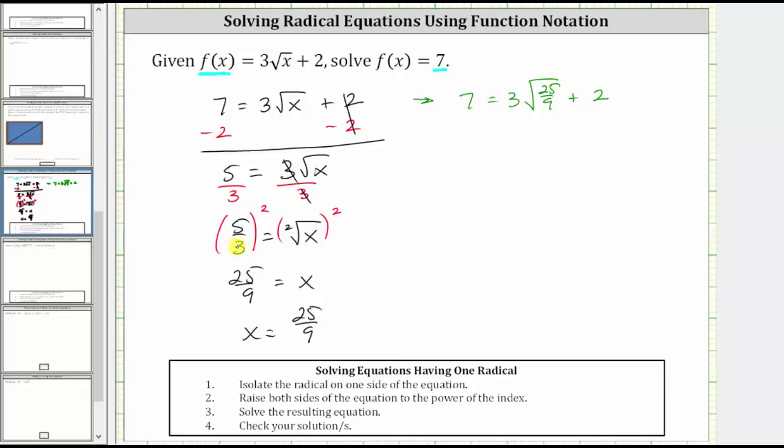Well we know the square of five thirds is equal to 25 ninths, and therefore the square root of 25 ninths is five thirds, which gives us seven equals three times five thirds plus two.